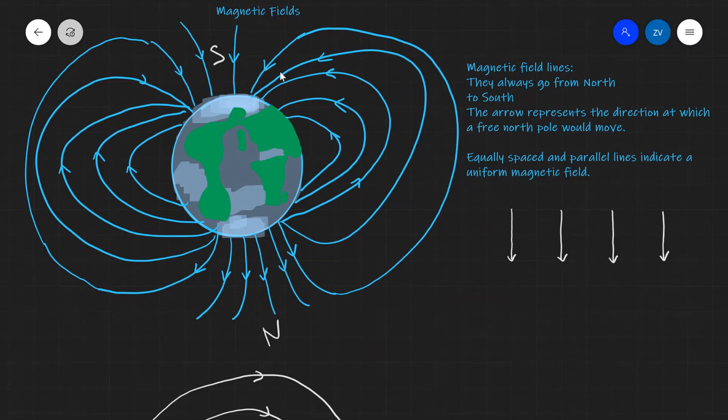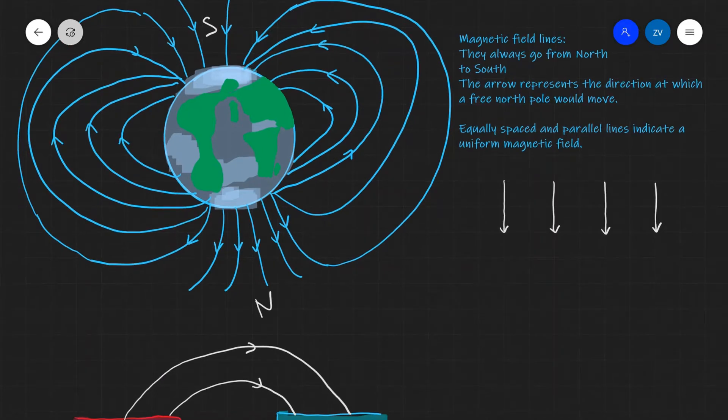Additionally, equally spaced and parallel lines indicate a uniform magnetic field. This is very similar to a uniform electric field, for instance. In fact, anytime we have spaced and parallel lines, this indicates a uniform field—in this case, a uniform magnetic field.